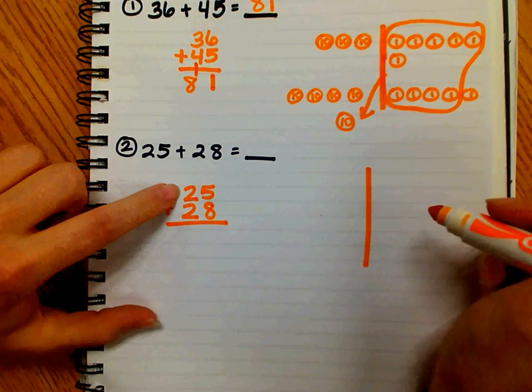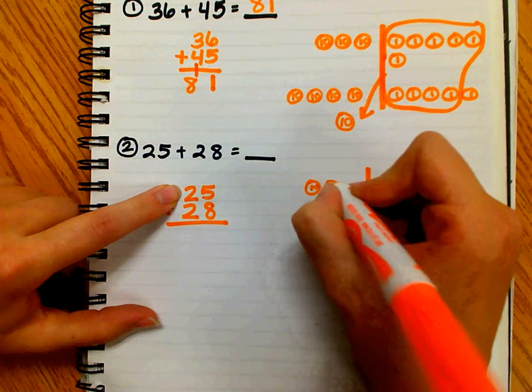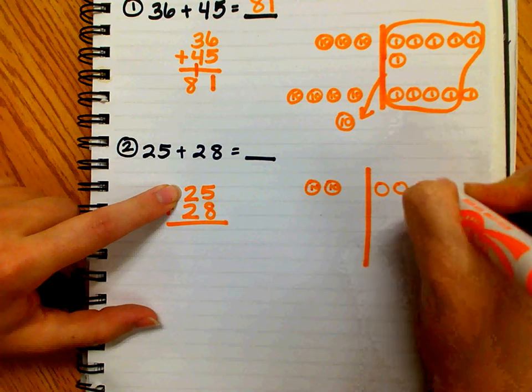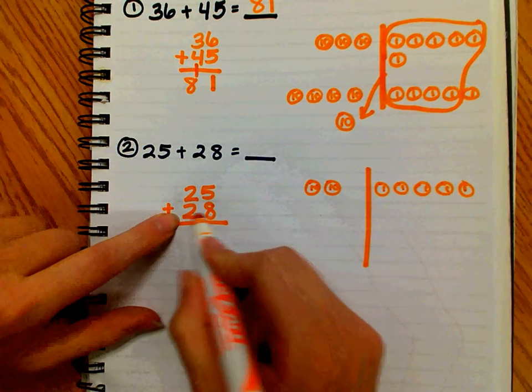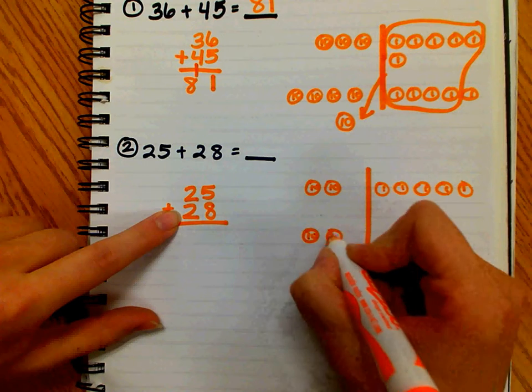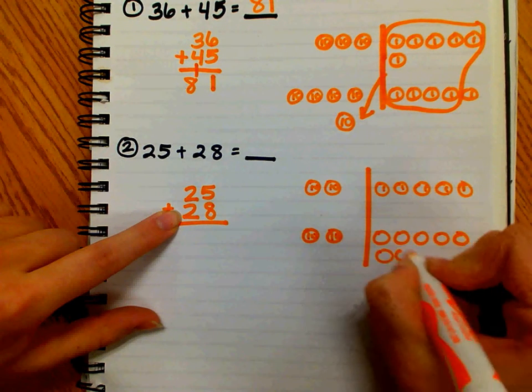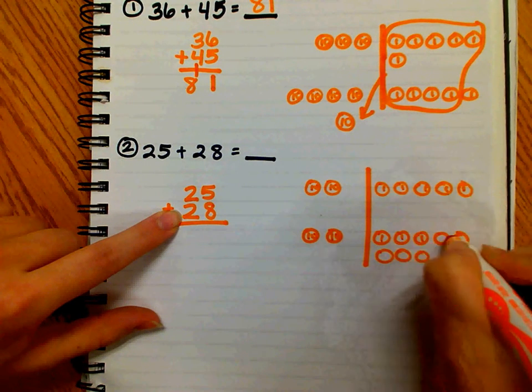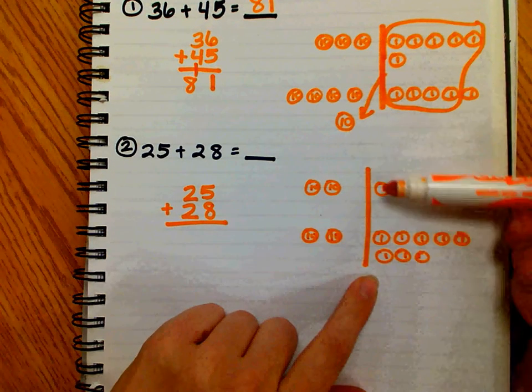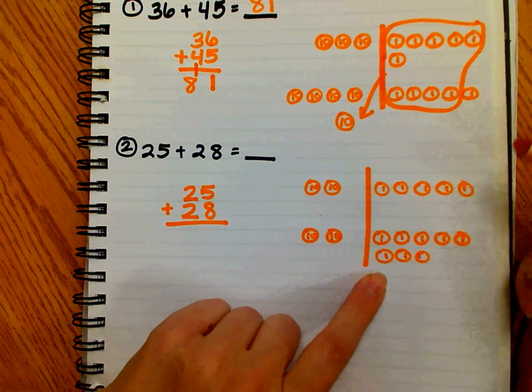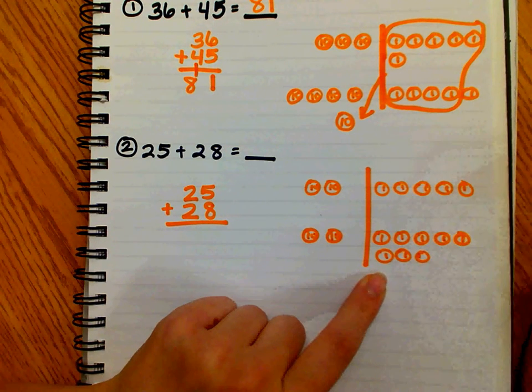I have two tens and five ones for my first number, and I have two tens and eight ones for my second number. Notice that I'm putting my ones in rows of five. This makes it a lot easier for students to recognize how many they have, and it also keeps them organized.